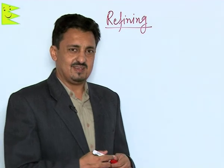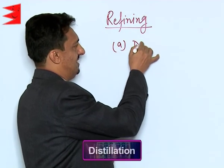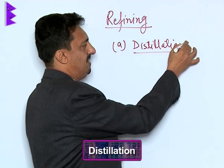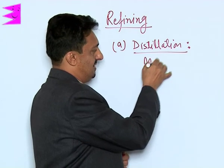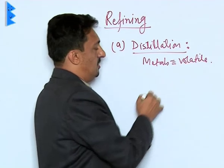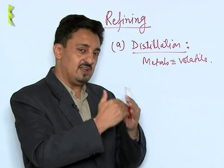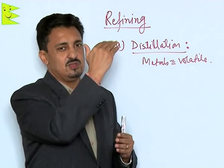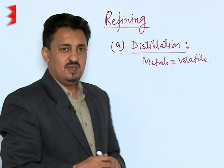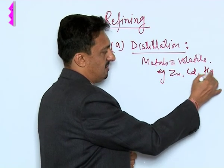The first technique is distillation, which is mainly used for metals that are volatile. The impure metal is heated above its boiling point so it gets converted into vapors. Those vapors are separated out and condensed to give you the pure metal. Therefore it is mainly used for metals like zinc, cadmium, and mercury, which are volatile.